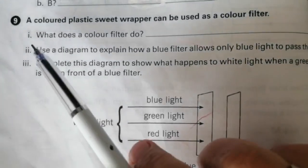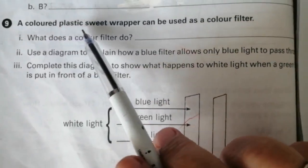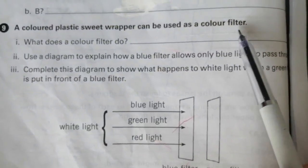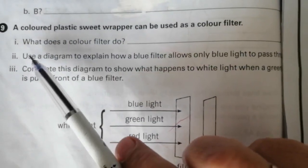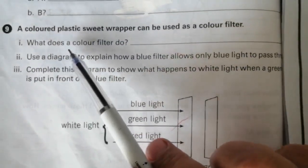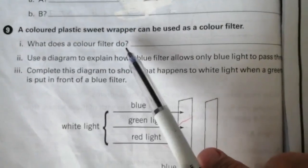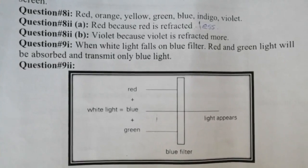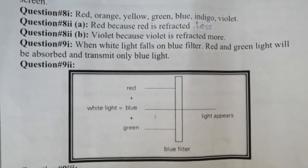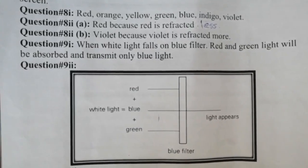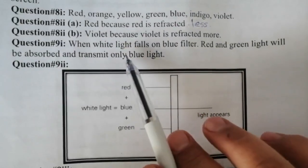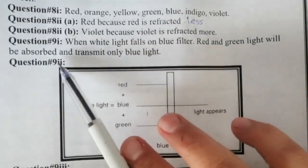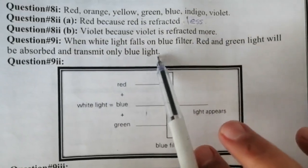Question number 9: a colored plastic sweet wrapper can be used as a color filter. Part 1: what does a color filter do? A color filter absorbs some colors and transmits others. For example, when white light falls on a blue filter, red and green light will be absorbed and only blue light is transmitted.